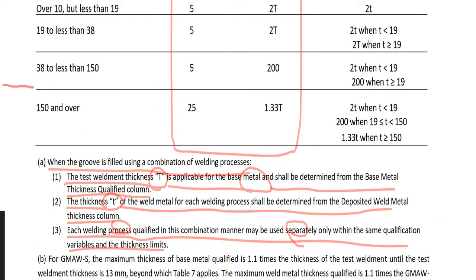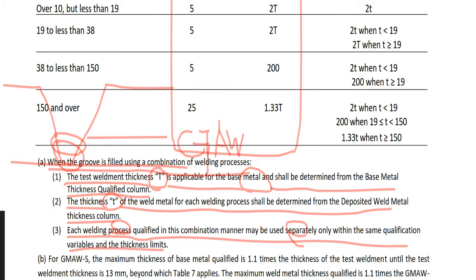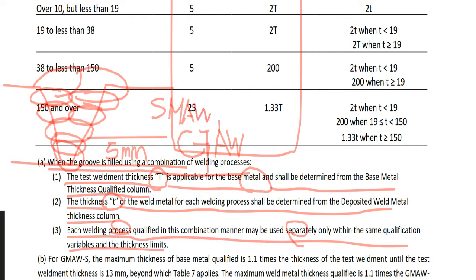For example, we have a groove weld here. You weld it with GTAW for the root pass and second pass — this is GTAW, and this is 5mm. Next, third pass to the final pass — third, fourth, fifth, sixth, seventh, eighth, ninth — this is SMAW, and the thickness of the SMAW deposit is 15mm.